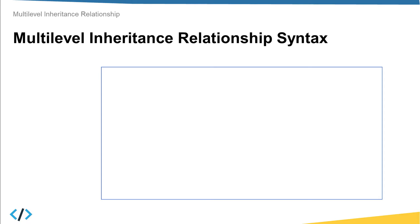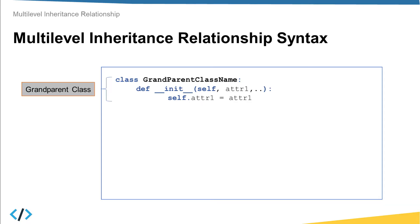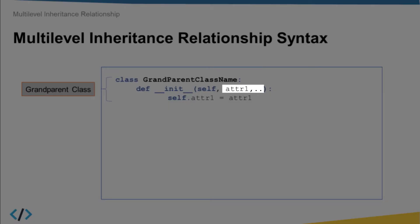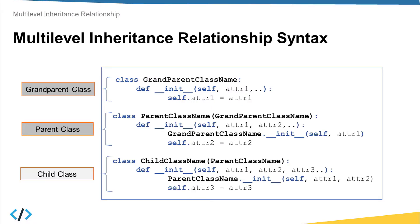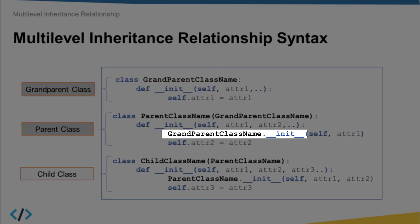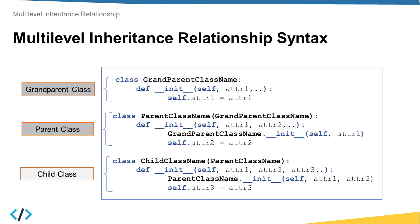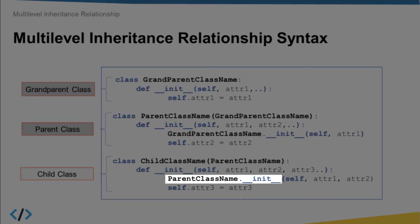Now let's see the syntax of this relationship — in other words, how to implement it in Python. First you have to define the grandparent class and add the required attributes and methods, for example atr1. You do the same for the parent class and the child class. The parent class should initialize the grandparent class values by calling the grandparent constructor using the grandparent class name and the __init__ method.